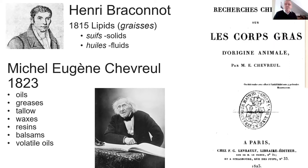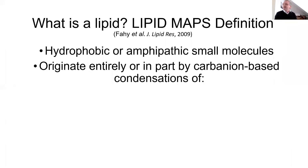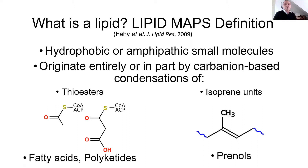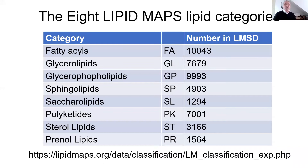Before we classify lipids, we have to define what one is — and as Val said earlier, this is a particularly thorny question. If you have three lipid scientists in a room and ask them to define this, you will probably get at least four definitions. The LipidMaps definition is of a hydrophobic or amphipathic small molecule which originates entirely or in part by carbon condensations of either fatty thioesters — acetyl CoA, malonyl CoA, or acetyl carrier protein in the case of fatty acids and polyketides — or the condensation of isoprene units in the case of the prenol lipids. In LipidMaps, we categorise lipids into eight different categories.